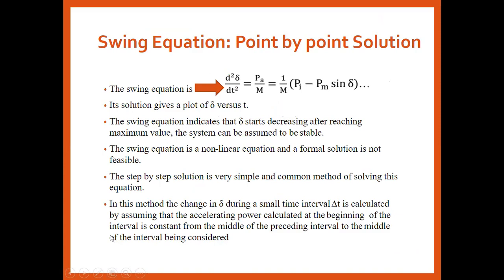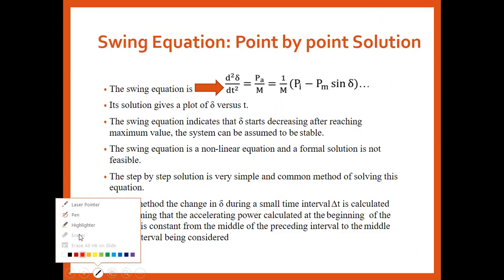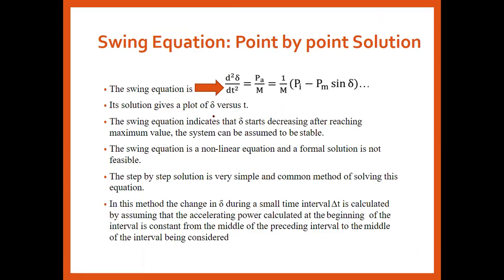The solution uses a plot of delta versus time t. The swing equation is used to find the value of delta and the rate of change of delta with respect to time. Generally, it indicates that delta starts increasing and then starts decreasing after reaching the maximum value, which is delta_max.